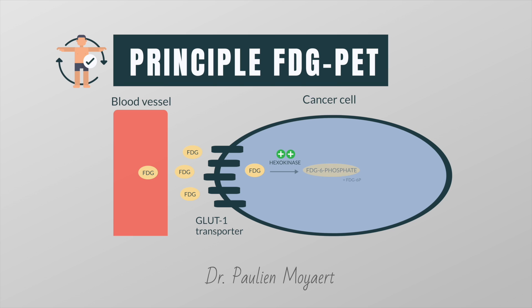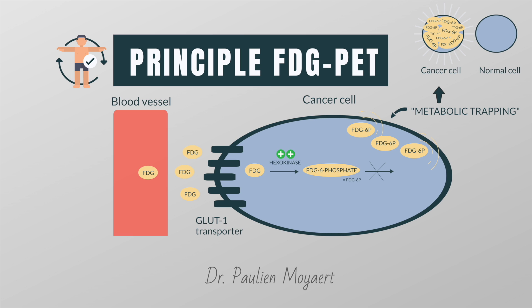FDG is phosphorylated by hexokinase, and once phosphorylated, the structural changes prevent FDG from being further catabolised or transported back into the extracellular space. This process is called metabolic trapping and results in increased uptake of FDG within cancer cells.